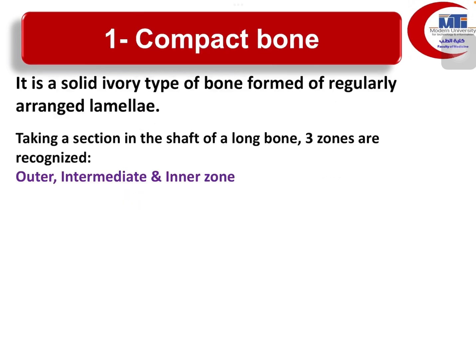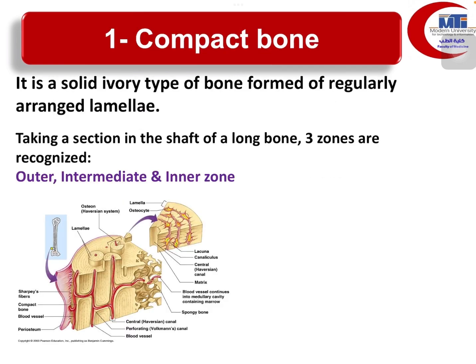The first type is compact bone, which is defined as a solid ivory type of bone tissue formed by regularly arranged bone lamellae. There are two types of bone tissue: compact bone, which we are going to discuss now, and cancellous or spongy bone. Compact bone can be found in the shaft of long bones, like the humerus and femur.